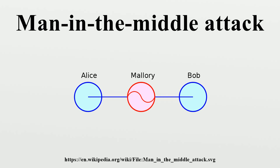Example of an attack: Suppose Alice wishes to communicate with Bob. Meanwhile, Mallory wishes to intercept the conversation to eavesdrop and optionally deliver a false message to Bob. First, Alice asks Bob for his public key. If Bob sends his public key to Alice but Mallory is able to intercept it, a man-in-the-middle attack can begin. Mallory sends a forged message to Alice that claims to be from Bob, but instead includes Mallory's public key.